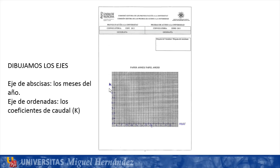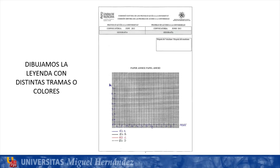On the y-axis we place the flow coefficients, identified with the letter K. Since the highest value is 6, we will carry the axis up to 7. Then — and this is important not to forget — we must draw the legend with different patterns or colors. We used the typical four-color pen, which we can bring to the exam.